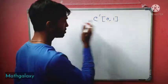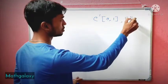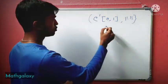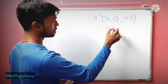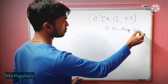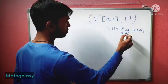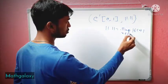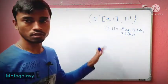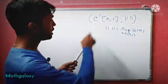So the space we discuss today is C¹[0,1] with the supremum norm. The sup norm is defined as the supremum of |f(x)| for x in [0,1].